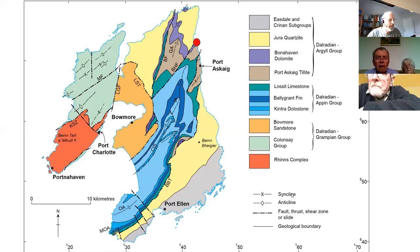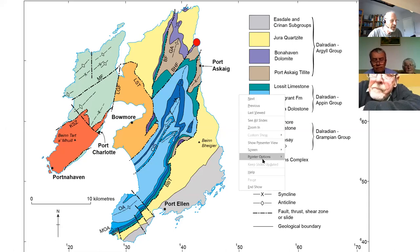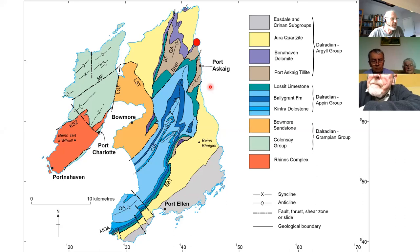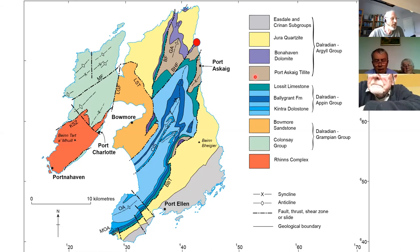Can you all see a geological map of Islay? I'm going to move the pointer slowly. We're here in the northeast corner of Islay in Bonnerhaven. The key features of the east side of Islay are the Jura quartzite in yellow, and underneath that the Bonnerhaven dolomite in a purplish color, which overlies the Port Askaig tillite. We're going to be talking about the Bonnerhaven dolomite and we'll see bits of the Jura quartzite.